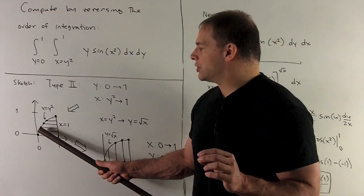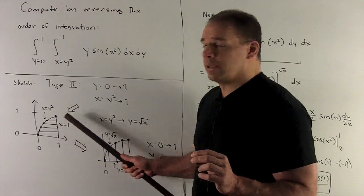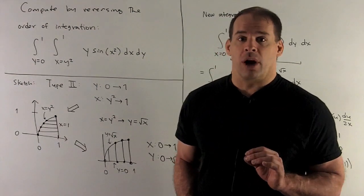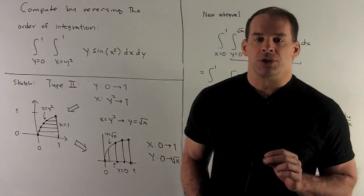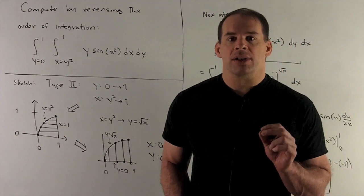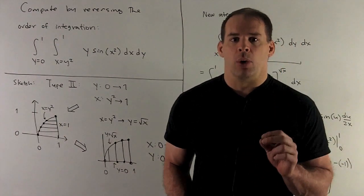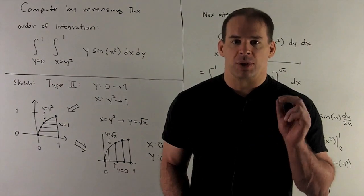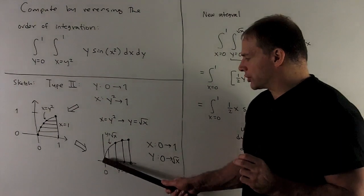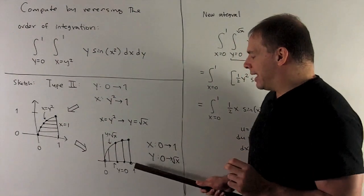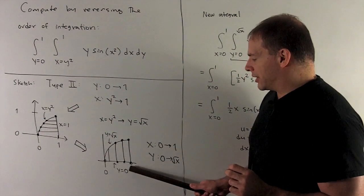This is our region. Point is, you want to put little guidelines on to make sure you're in the right region. All right, interchange. Now instead of y going from 0 to 1, I want to know where does x go from? This will be for the outside integral. x is going to go from x equals 0 to x equals 1.